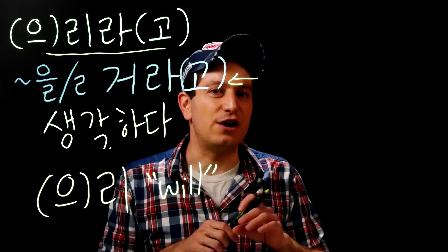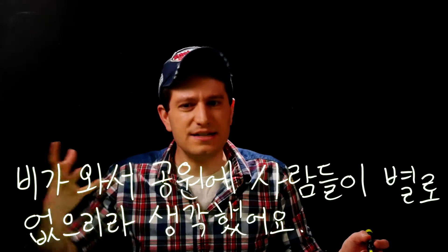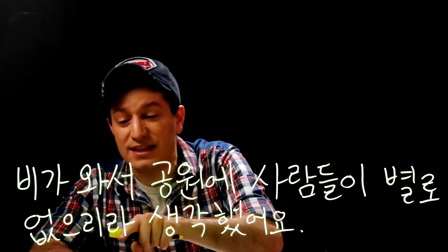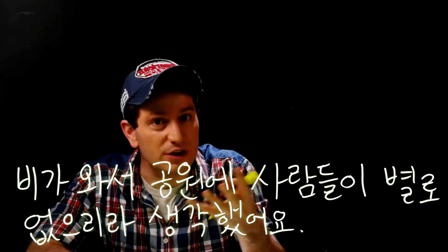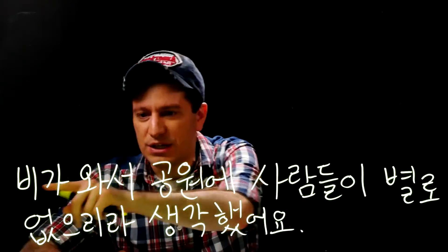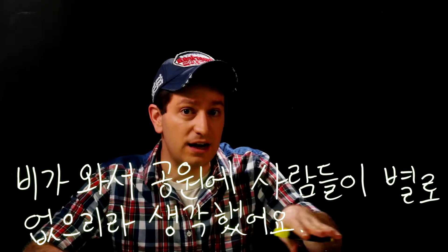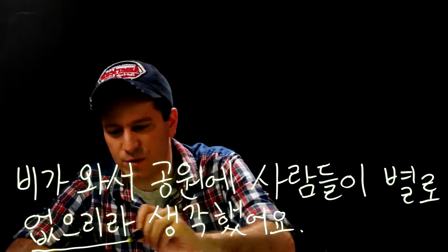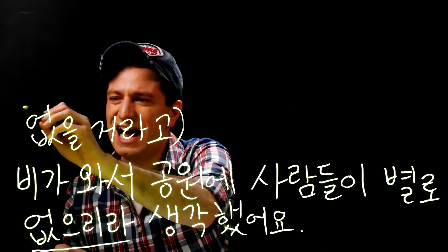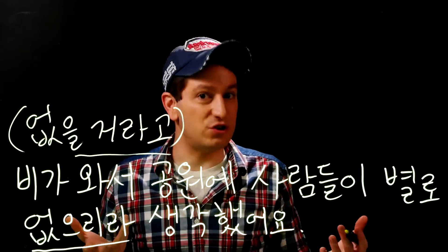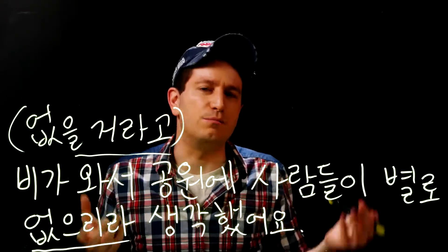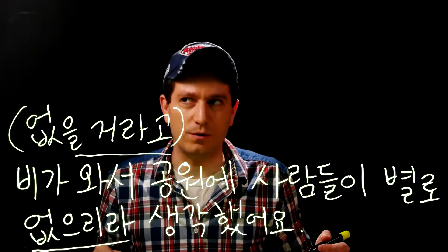Let me give you an example sentence. 비가 와서 공원에 사람들이 별로 없으리라 생각했어요. Because it rained, I thought there wouldn't be very many people at the park. It rained, so I figured there wouldn't be that many people at the park. Remember, it's equivalent to the modern regular future tense quoting form, so you can replace it in your head: 비가 와서 공원에 사람들이 별로 없을 거라고 생각했어요.